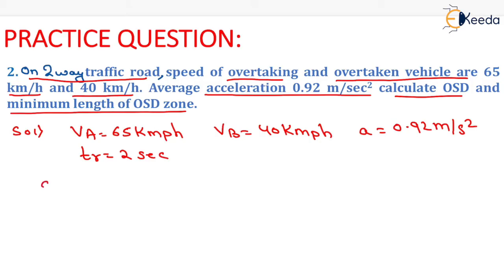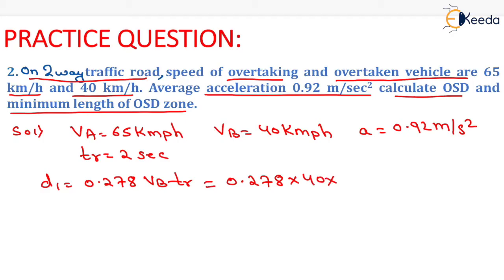We will compute the value of D1, which equals 0.278 × VB × TR. Putting in the values — VB is 40 km per hour and TR is 2 seconds as per the Indian Road Congress — we get D1 equals 22.24 m.